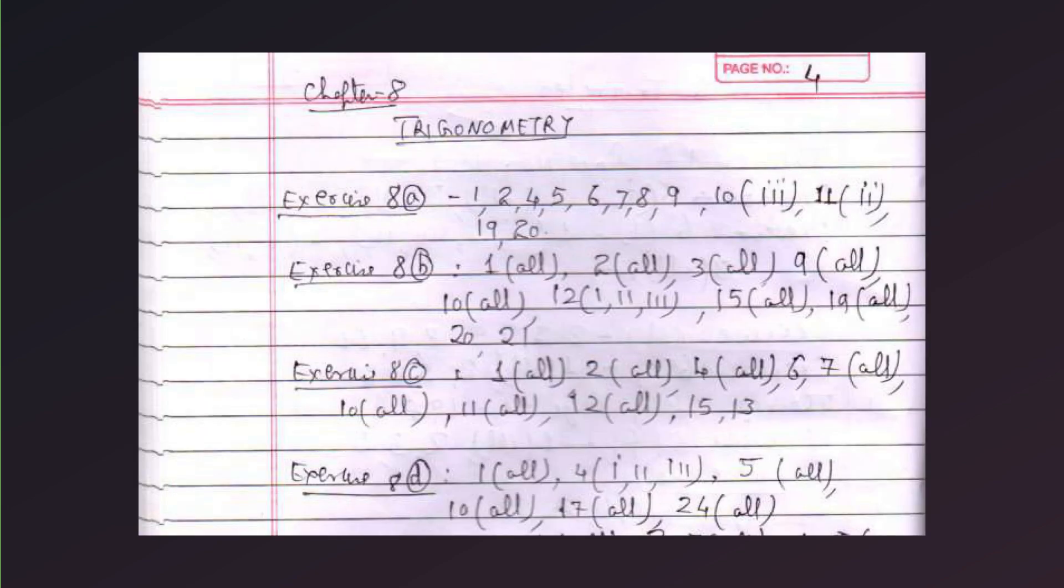Chapter 8, trigonometry. Exercise 8A, 1, 2, 4, 5, 6, 7, 8, 9, 10. Under 10, question 3, 11 question 2, 19, and 20. Exercise 8B, 1 all, 2 all, 3 all, 9 all, 10 all, 12 numbers 1, 2, 3, 15 all, 19 all, 20, 21.